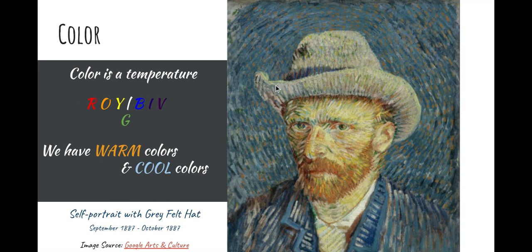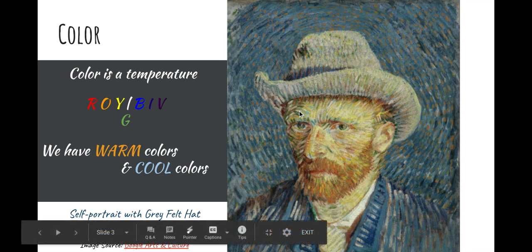Color is a temperature, and we have warm colors and cool colors. So we've got the colors of the rainbow here — Roy G. Biv. Red, orange, and yellow are warm colors. Blue, indigo, violet are cool colors. Green is kind of on the fence because it's made up of yellow and blue. If you have a little bit more yellow than blue, you create a warm green — yellow-green — and if you have a little bit more blue than yellow, you create a blue-green, which is kind of a cool green. So color is a temperature, and that's what you need to know about that.